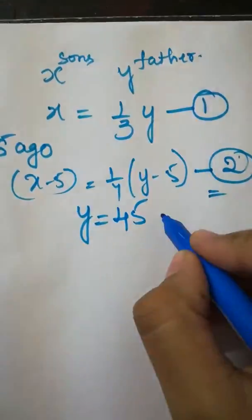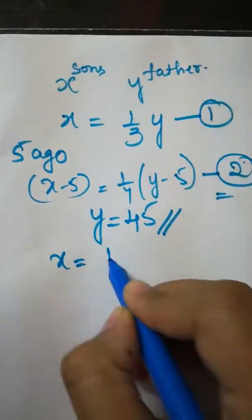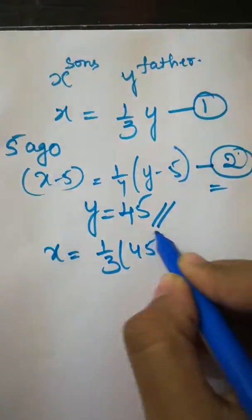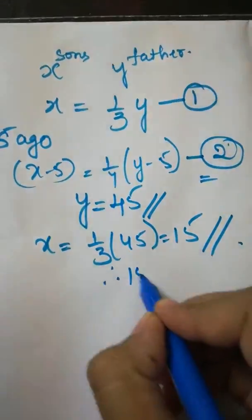So the present age of father is 45 years, and the age of son is one third of 45 which is 15. Therefore the answer for this question is 15 years.